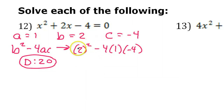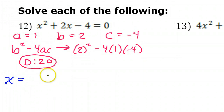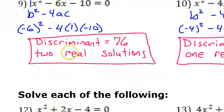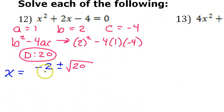Now let's do the rest of the quadratic formula. x equals the opposite of b — b is 2, so the opposite of b is negative 2 — plus or minus the square root of b squared minus 4ac, which is the discriminant, so we put the square root of 20. By the way, the discriminant does not include the radical — if I ask you for the discriminant, like on problem number 9, the discriminant is 76, not the square root of 76. Then it's all over 2a, and a is 1, so 2a is just 2.